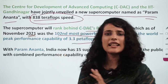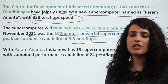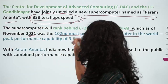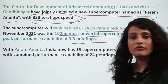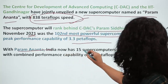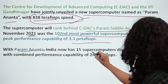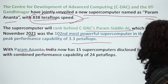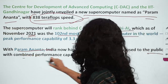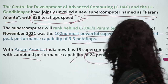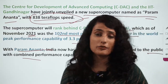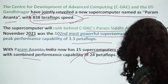Param Siddhi AI is still less powerful than Pratyush and Mihir at 6.8 petaflops, but Param Anant is on a completely different level. This is very important news. India now has 15 supercomputers disclosed to the public with a combined performance of 24 petaflops.